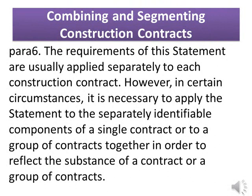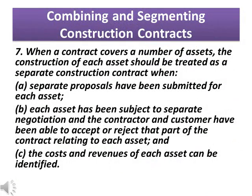Combining and Segmenting Construction Contracts — Para 6: The requirements of this statement are usually applied separately to each construction contract. However, in certain circumstances, it is necessary to apply the statement to the separately identifiable components of a single contract or to a group of contracts together in order to reflect the substance of a contract or a group of contracts. Para 7: When a contract covers a number of assets, the construction of each asset should be treated as a separate construction contract when: A) separate proposals have been submitted for each asset; B) each asset has been subject to separate negotiation and the contractor and customer have been able to accept or reject that part of the contract relating to each asset; and C) the costs and revenues of each asset can be identified.